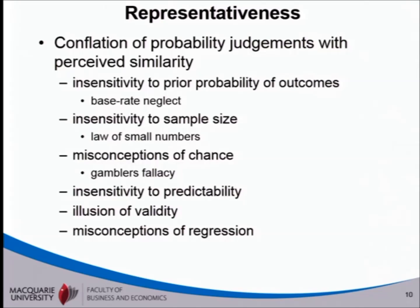We're looking at problems with probability judgments. We've looked at the base rate neglect problem, insensitivity to sample size, and misconceptions of chance — things like the gambler's fallacy and hot hands.